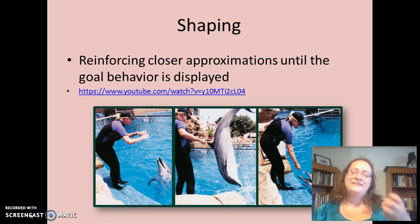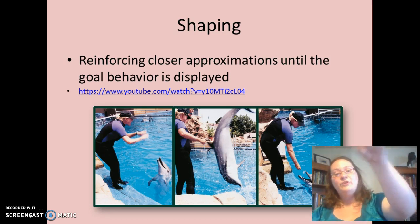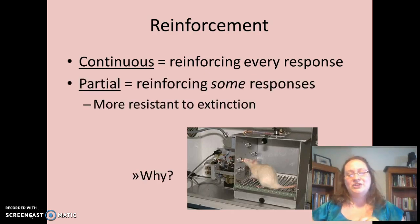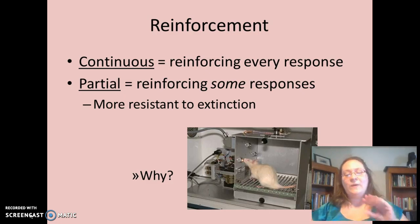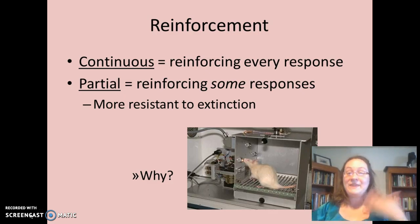Shaping is reinforcing every step towards a goal behavior. If you're trying to teach a dolphin to jump through a hoop, you give them a little snack every time they get closer — approaching the hoop gets a snack, standing up a little gets a snack, and jumping through the hoop gets a snack. Reinforcement can be continuous — every time you do the behavior you get a treat — or partial, where you only reinforce maybe every fifth or eighth time. Partial reinforcement is more resistant to extinction because the animal holds out hope, knowing the reward might come on the next turn.